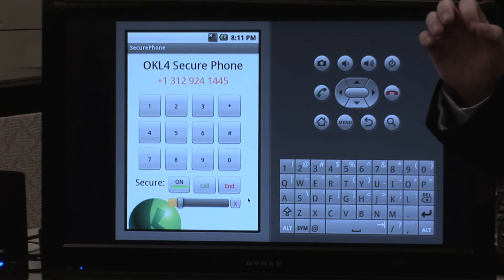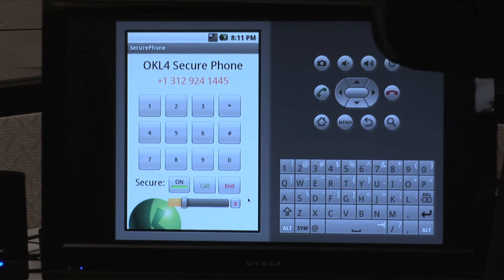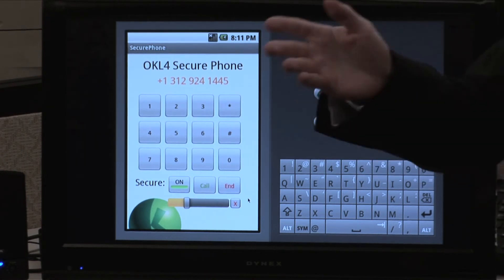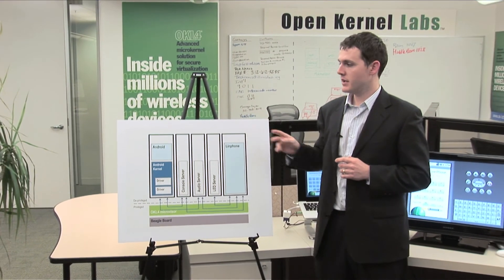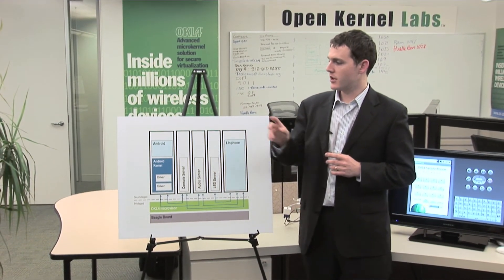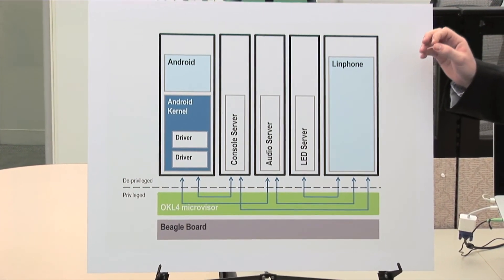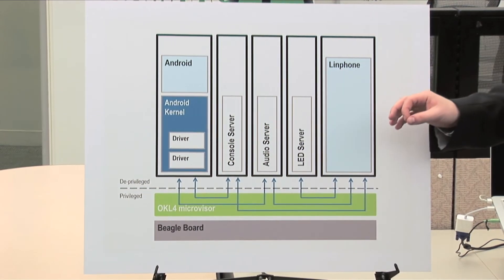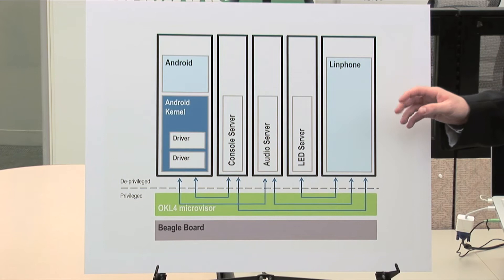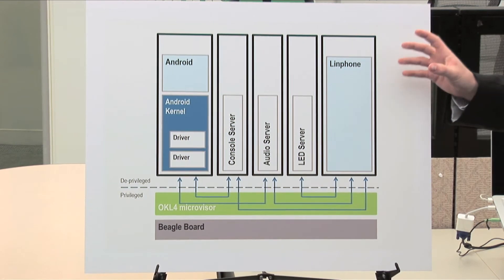The reason this was possible is because that audio data, when it's in secure mode, was being controlled entirely by that isolated voice over IP component. Let's have a look at the architecture that implemented this. So what we have here is the OKL4 microvisor with a number of secure cells deployed on it. The two major secure cells are a virtual machine environment running the Android operating system, and an isolated lightweight execution environment running a voice over IP application — in this case LinkPhone — which has been ported to run directly on top of the OKL4 microvisor itself. So what you can see here immediately is this provides very strict isolation between Android and that voice over IP component.